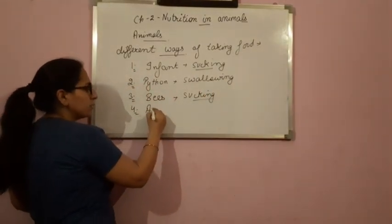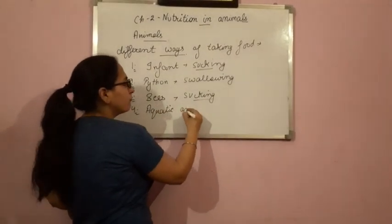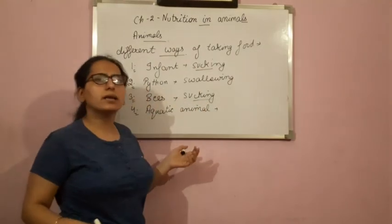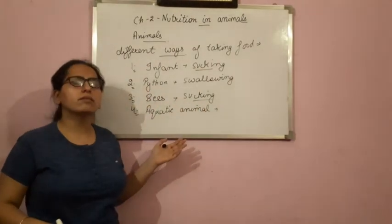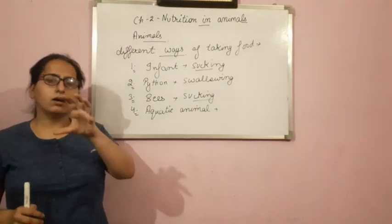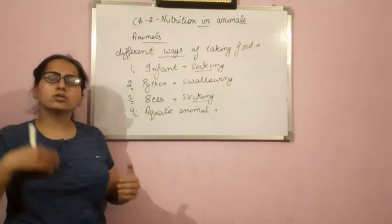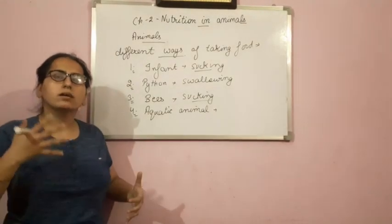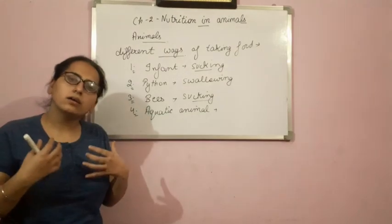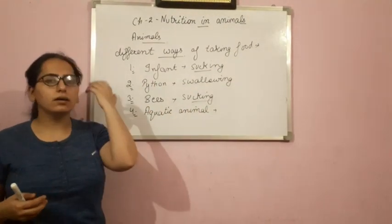Some aquatic animals — what do they do? They used to filter the water. Aquatic animals live in water, and in the water some tiny food particles are present. So these animals filter that water and then eat that food. So different types of organisms take food in different ways.